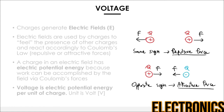We are almost ready to explain what voltage is, but first a few more simple concepts. The drawing here shows something you probably already know: charges of the same sign repel each other. Whether they are both positive or both negative, there will be a force that pushes them away. This force is called the Coulomb force. If charges have different signs, they will attract each other.